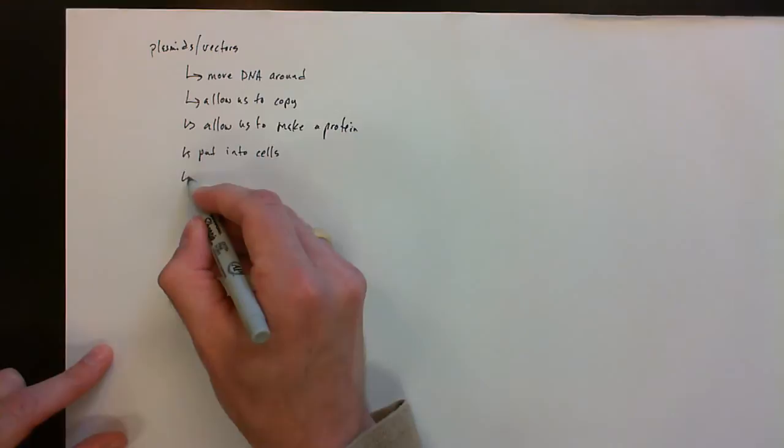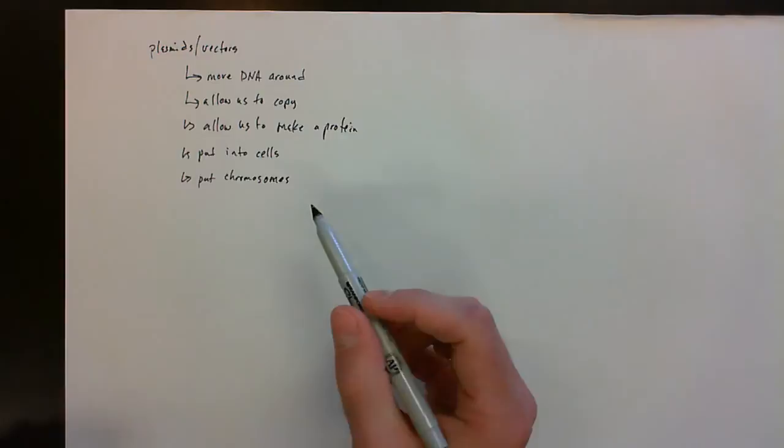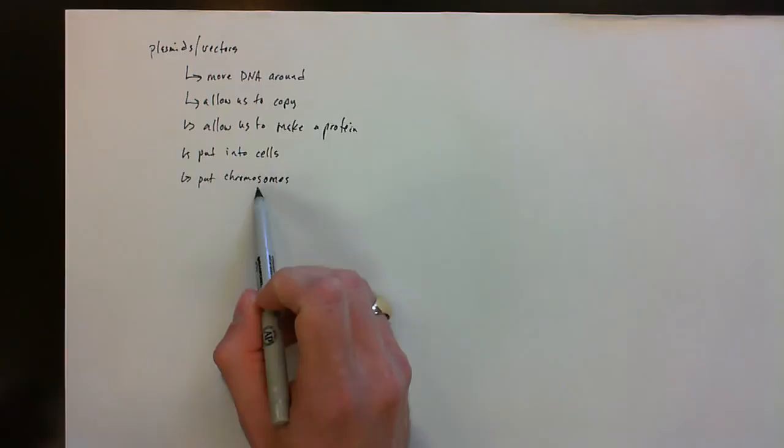So this is definitely of interest if you want it to be carried on to the next generation. So we utilize vectors that ultimately can allow us to put it into the organism's chromosomes, and then these can be inherited, so passed on to the offspring.